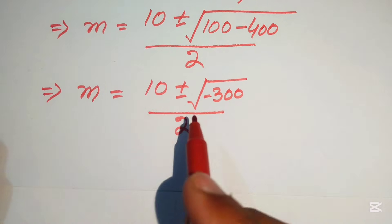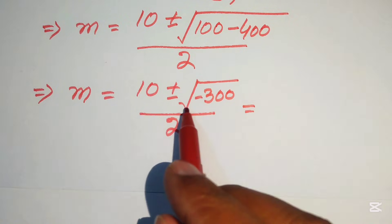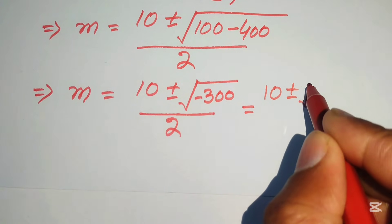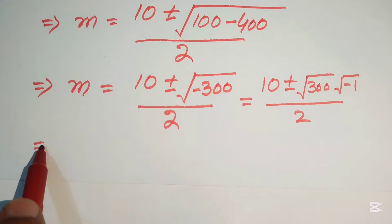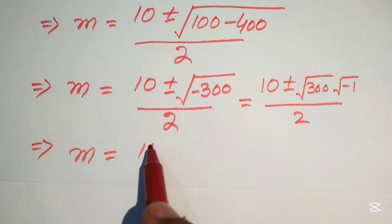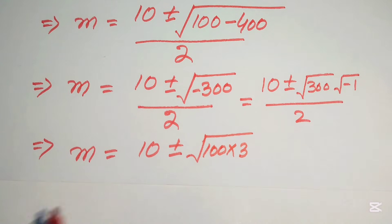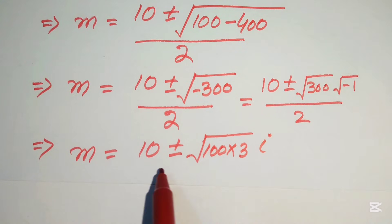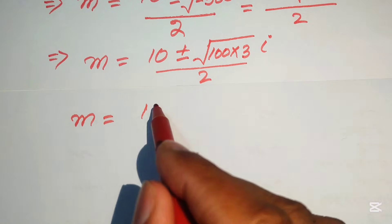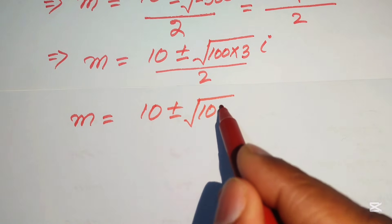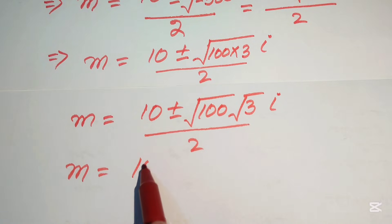We have a negative sign inside the square root, so we separate it: square root of minus 300 equals square root of 300 times square root of minus 1. We rewrite 300 as 100 times 3, and square root of minus 1 becomes iota (i). Applying the radical separately gives square root of 100 times square root of 3 times iota, and since square root of 100 equals 10, this becomes 10 times square root of 3 times iota.